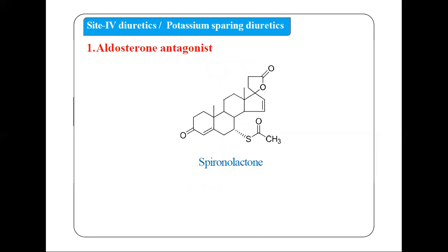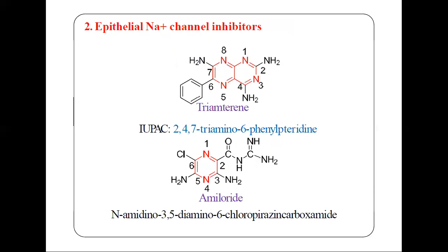The last category is site 4 diuretics, also called potassium-sparing diuretics. This includes two subclasses: first, aldosterone antagonists — with the main compound being spironolactone — and second, epithelial sodium ion channel inhibitors. The examples in this second subclass are triamterene and amiloride.